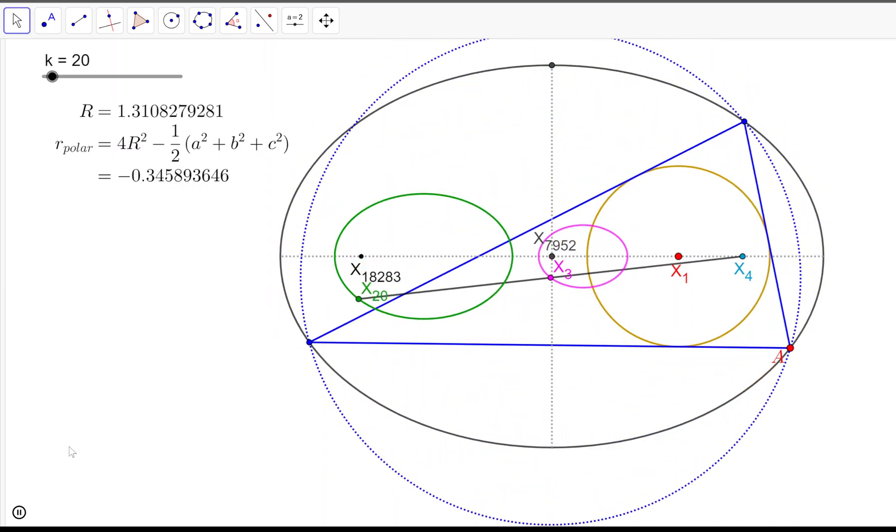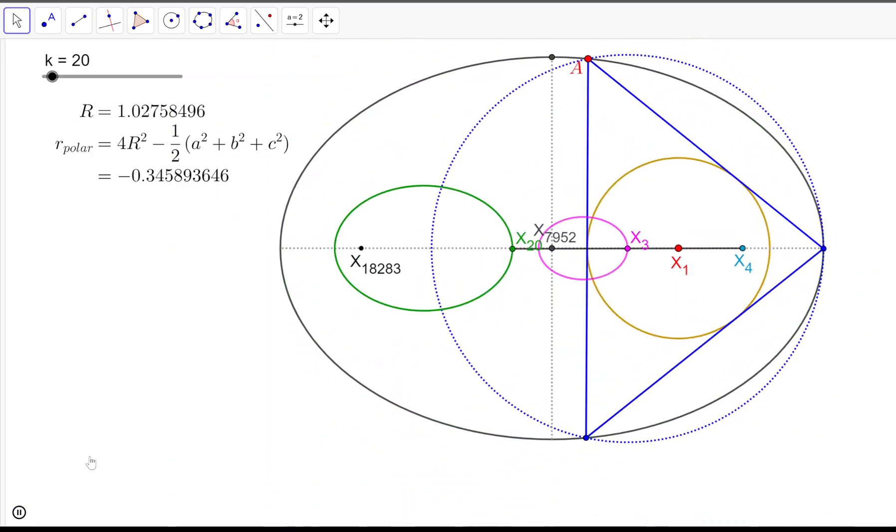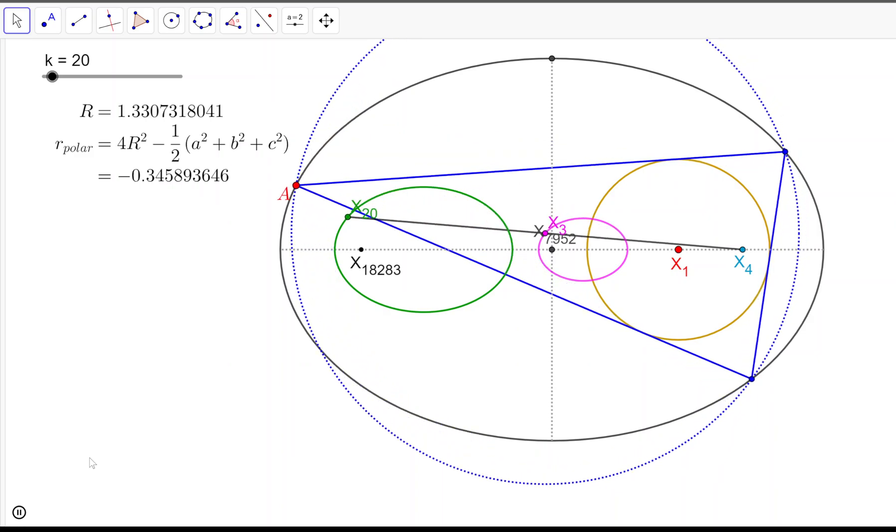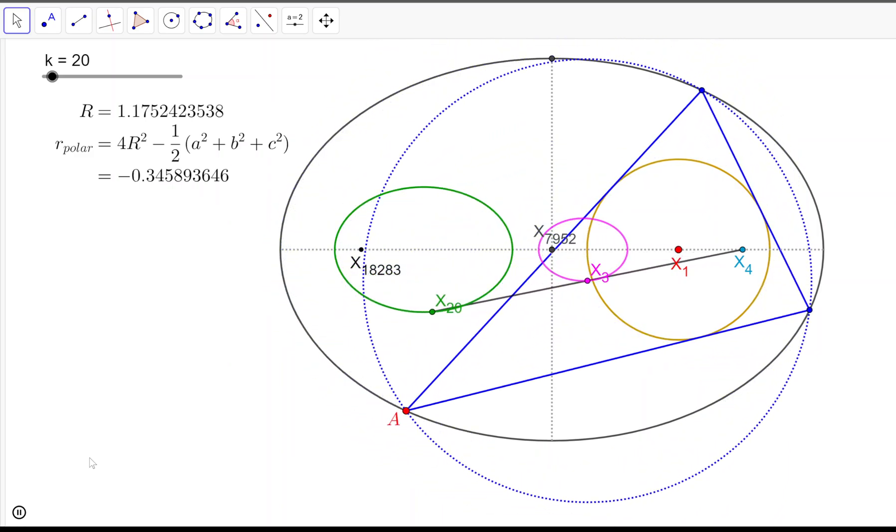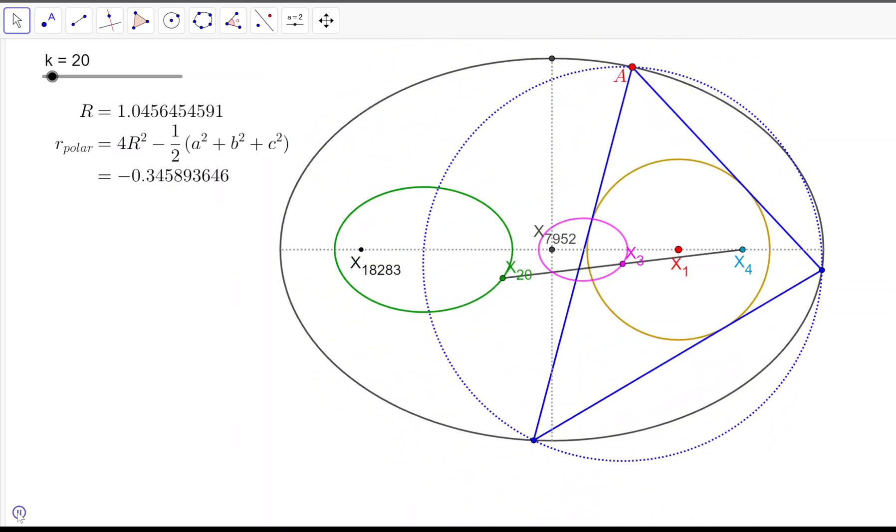Now, the interesting thing is that the central point here is associated with an object known as the polar circle of a triangle. I'm going to leave a link in the description. The details are not relevant here, but this circle is only defined when the triangle is obtuse. In this family here, all triangles are acute, right? So, at least in the real plane, that circle is not defined. Perhaps it has a picture on the complex plane.